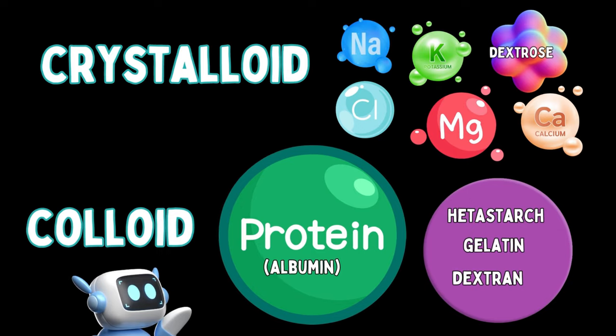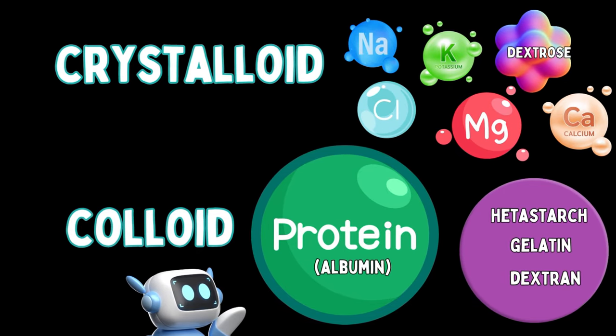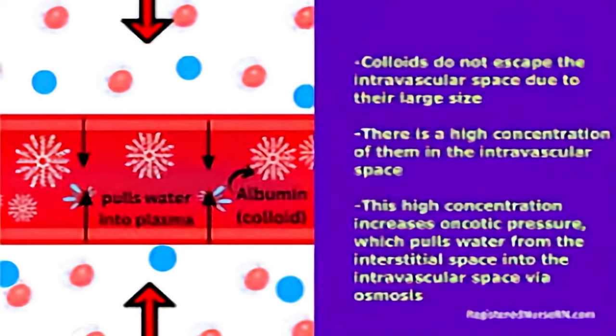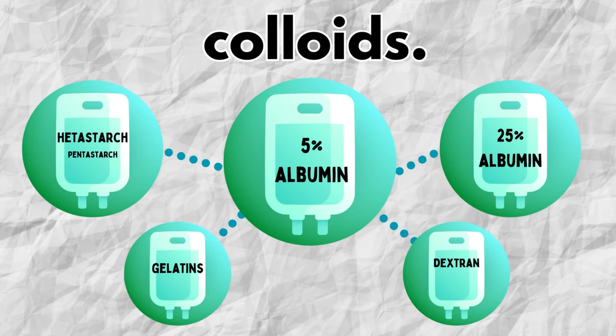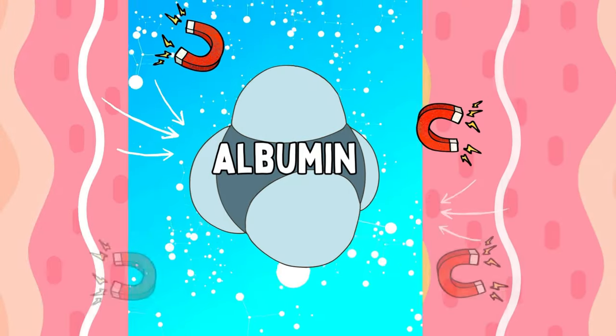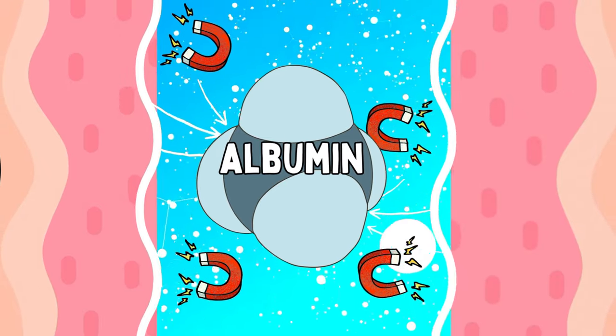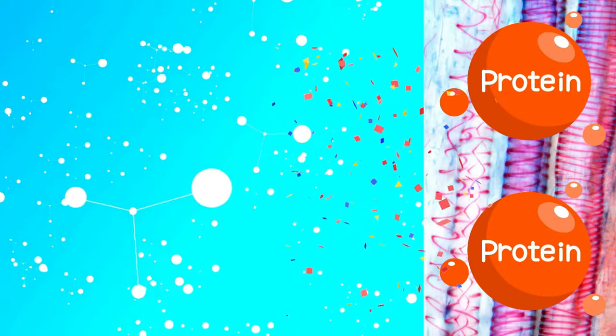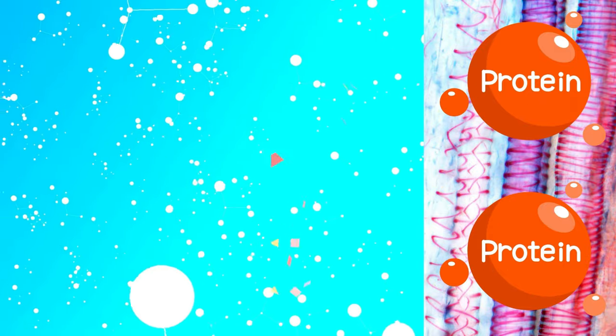Colloid solutions are IV fluids containing suspended molecules that are relatively large compared to those in crystalloid solutions. These large particles can't easily pass through semi-permeable membranes like blood vessel walls. Colloidal solutions include 5% and 25% human albumin, hydroxyethyl starch or hetastarch, pentastarch solutions, dextran solutions, and gelatin solutions. They hold fluid in the vascular space and are generally used to increase intravascular volume, maintain blood pressure, and replace plasma.